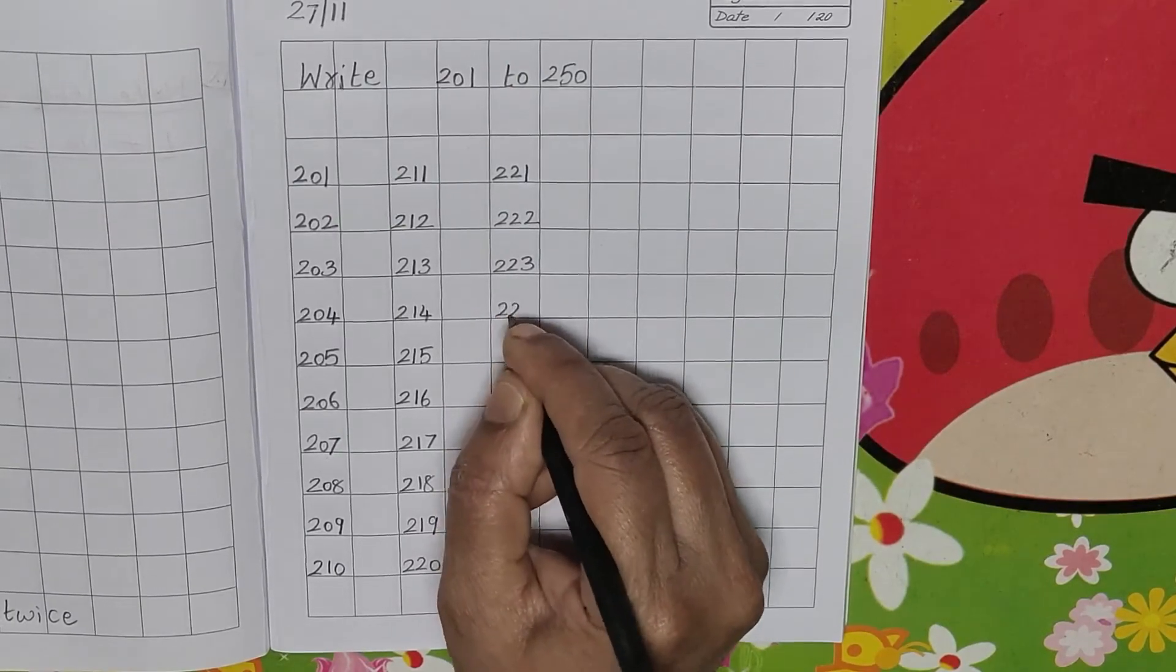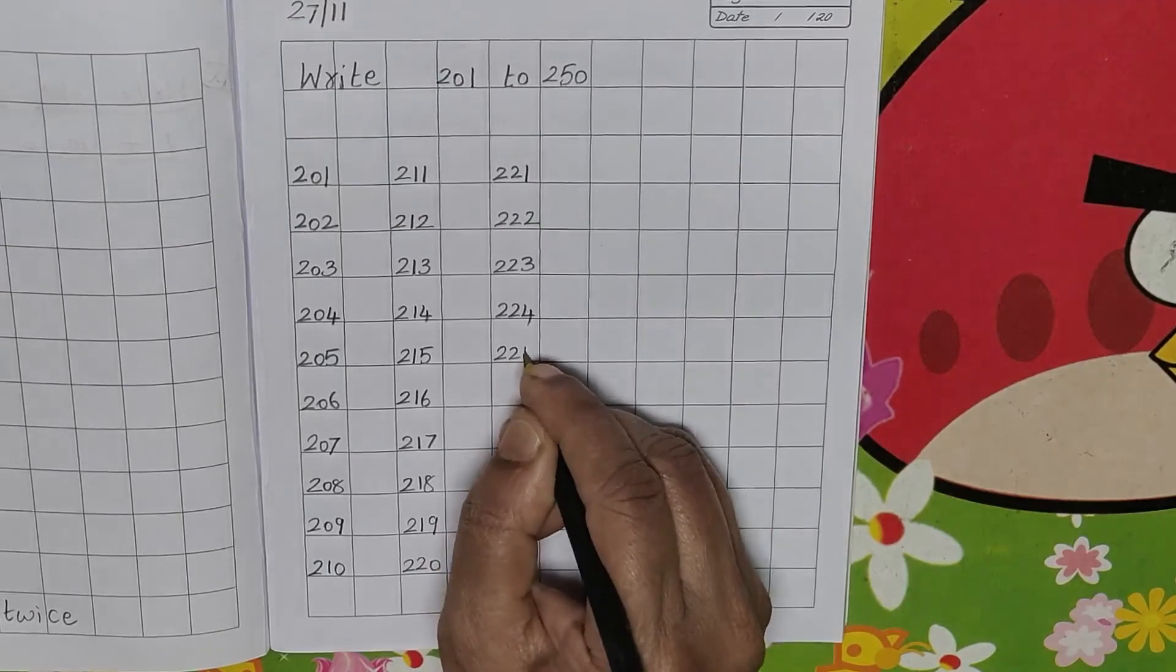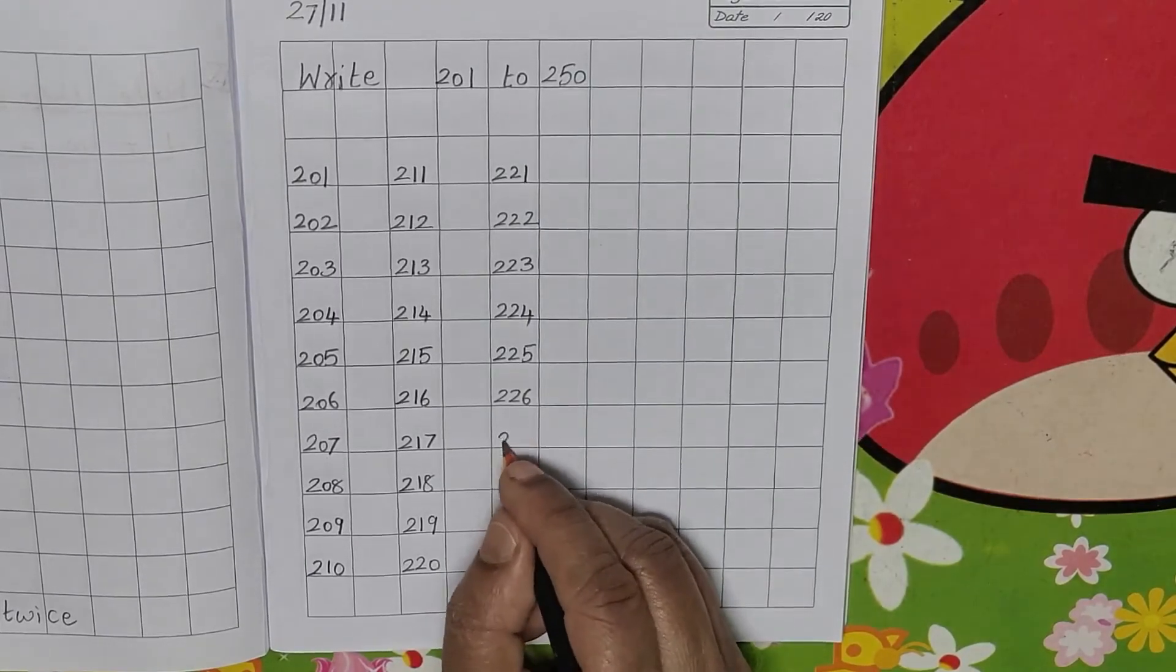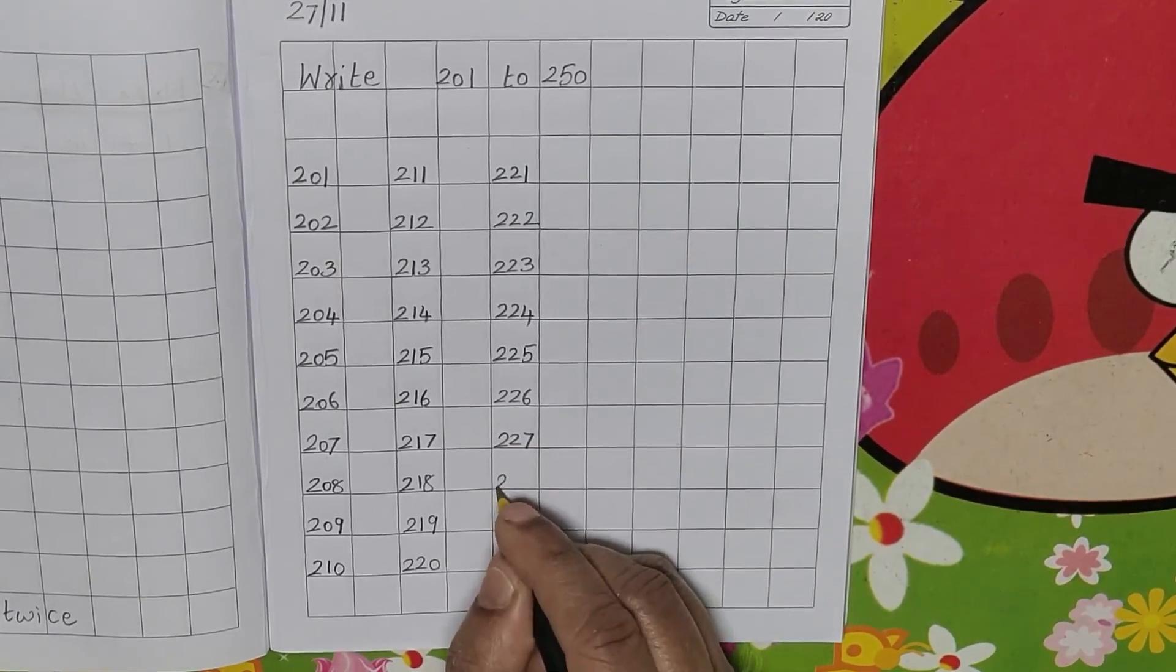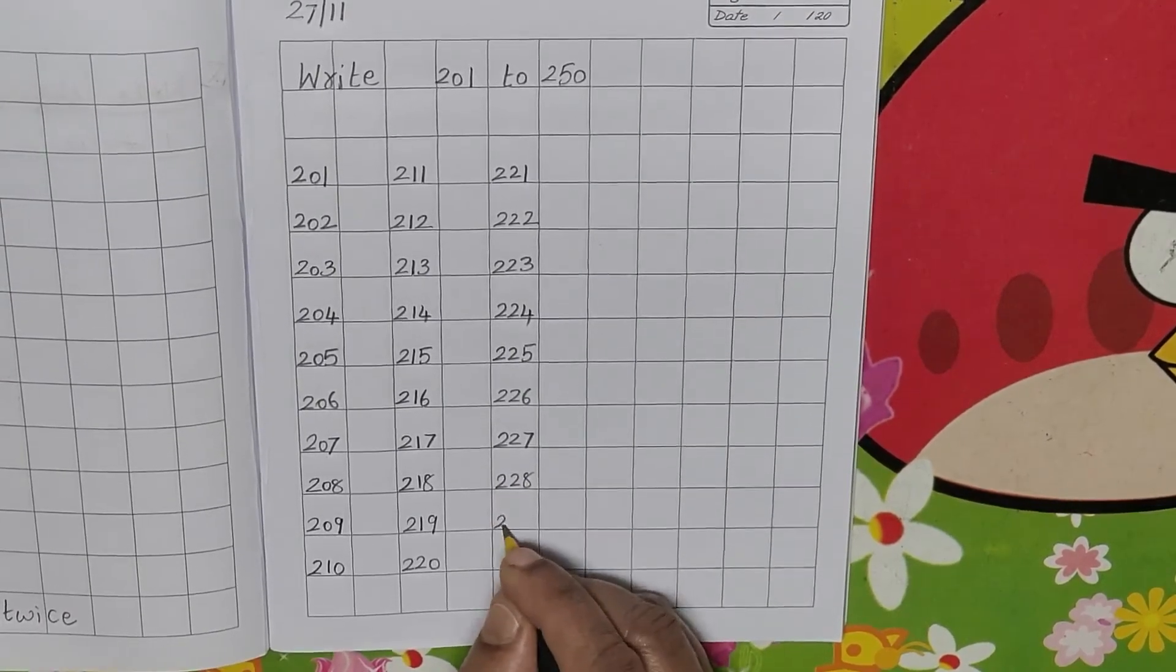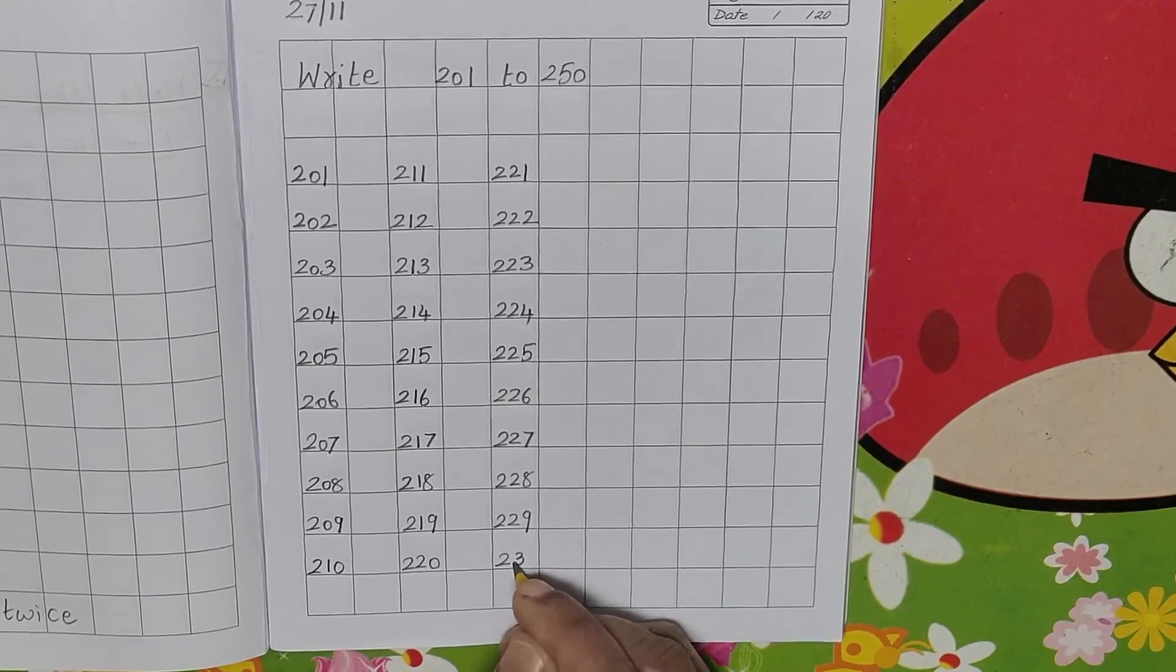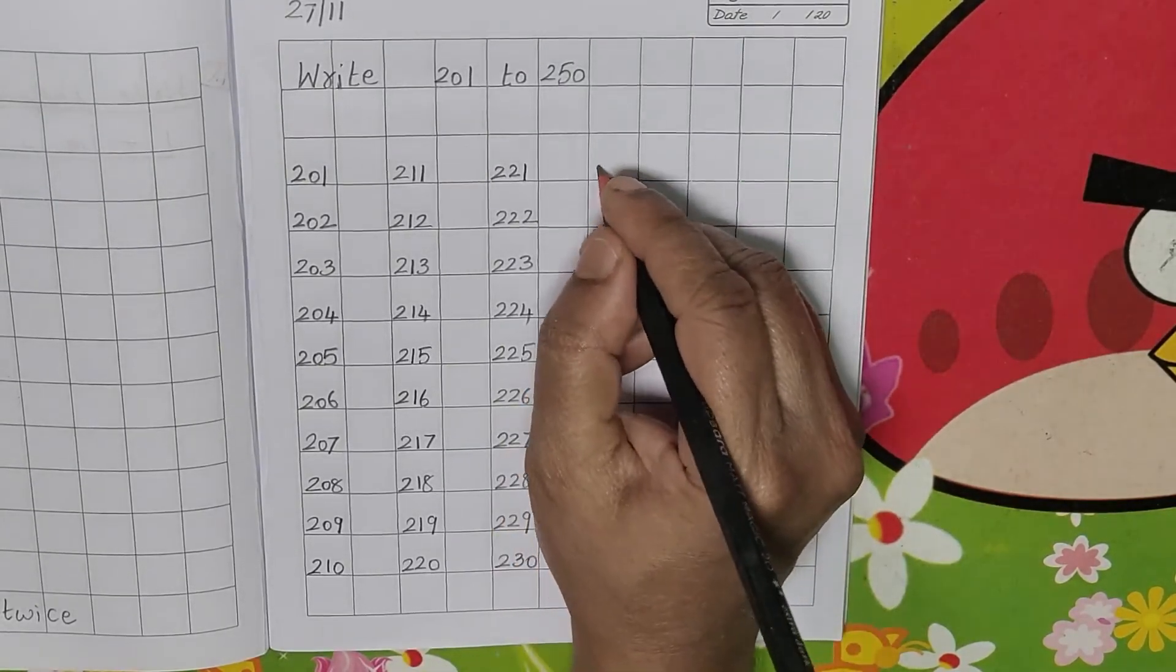222, 223, 224, 225, 226, 227, 228, 229. After 229, 230. After 230, leave one line.